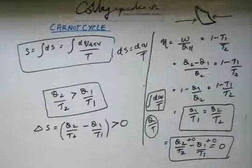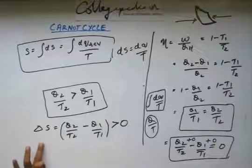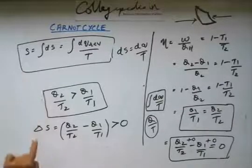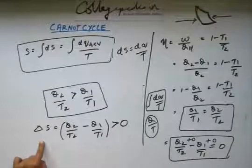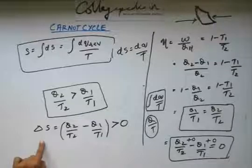We started to hunt a physical quantity that will tell me whether the process is spontaneous or not. And here we are to our destination. This delta S is a physical quantity and change in this physical quantity, if that is positive, the process is spontaneous. If that is not positive, the process is not spontaneous.